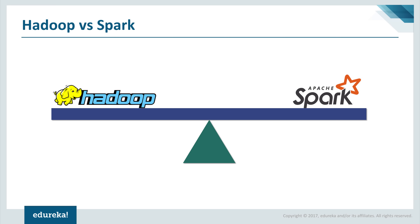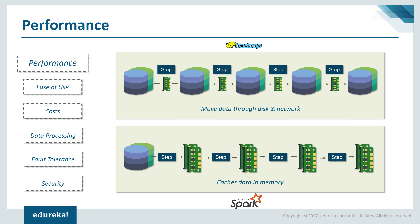Now that you have an overview of both frameworks, let's compare Apache Spark with Hadoop on different parameters to understand their strengths. Starting with performance: Spark is fast because of its in-memory processing, and it can also use disk for data that doesn't fit into memory. Spark's in-memory processing delivers near real-time analytics, making it suitable for credit card processing systems, machine learning, security analytics, and processing IoT sensor data.